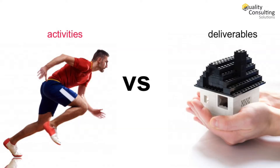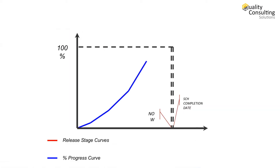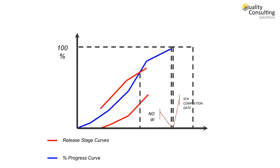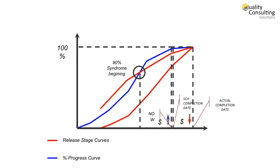The RCM uses Deliverable Release Stage, DRS, rather than Activities Progress Estimates, making it possible to plot boundaries where the Progress Curve — the Project S-Curve — is to be found.